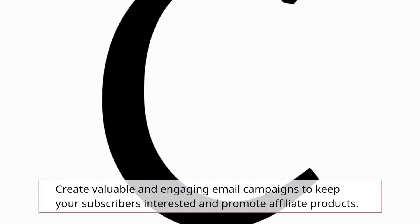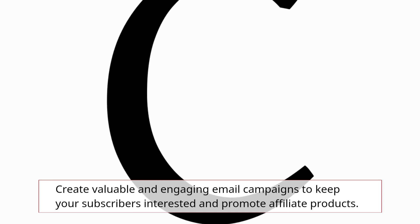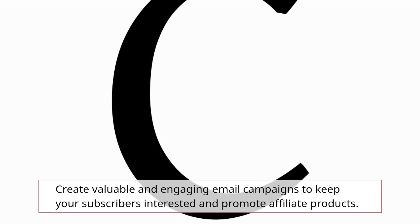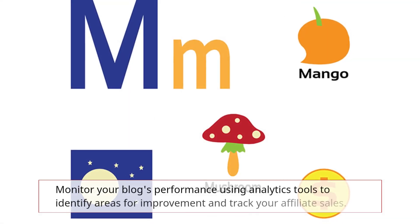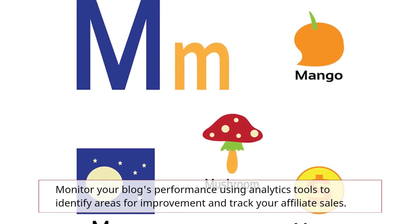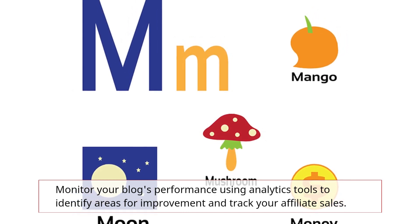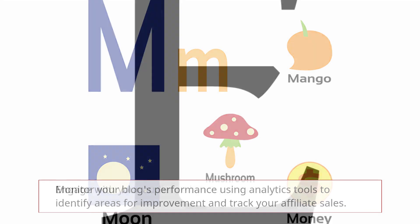Build an email list by offering a freebie or incentive to your visitors in exchange for their email addresses. Create valuable and engaging email campaigns to keep your subscribers interested and promote affiliate products. Monitor your blog's performance using analytics tools to identify areas for improvement and track your affiliate sales.